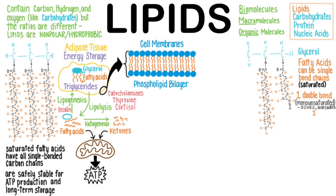If there are two or more double bonds in a fatty acid, it is called polyunsaturated, sometimes just called PUFA for short. Famous omega-3 fatty acids are named for having their first double bond at the third carbon, and have names you've probably heard of, such as DHA and EPA. Fish is an excellent source for these kinds of fatty acids. We must eat these essential fats, because we cannot make them on our own.